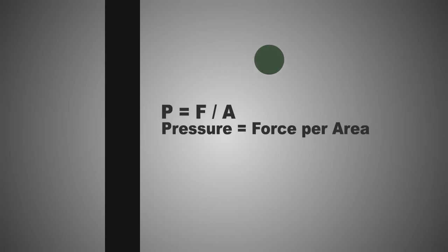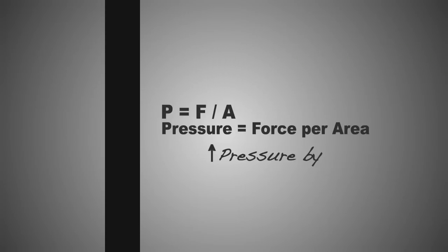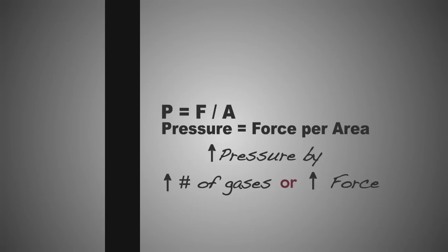Let's say that they run into the wall. When you get a gas running into the wall of a container, that's pressure. Pressure is force per area. You can increase pressure by either increasing the number of gas particles hitting the wall in a certain area, or by increasing the force with which the gas hits the wall.